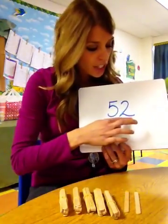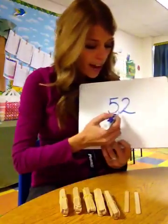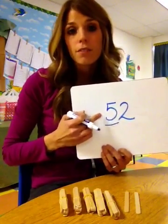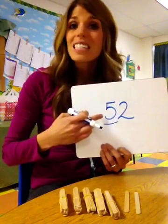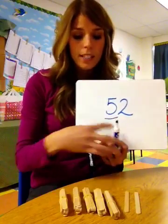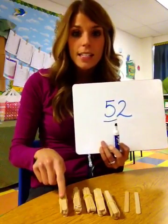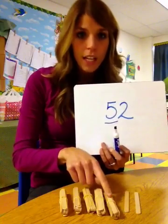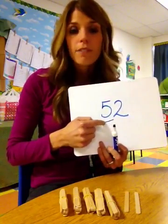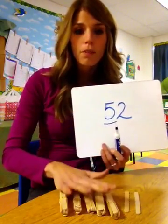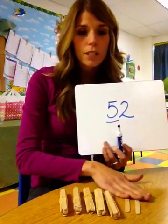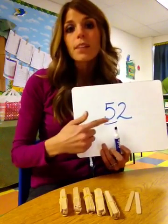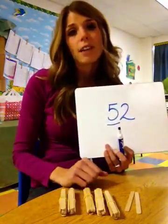Let's change it and underline the five. What is the value of five in fifty-two? That means, what does this number equal? Let's take a look at our sticks: ten, twenty, thirty, forty, fifty. The value of five is fifty. When we put fifty and two together, it makes the number fifty-two. This is practicing identifying place value.